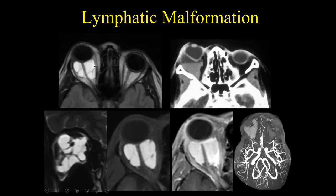Another cause of proptosis is lymphatic malformation. Here we can see high T2 signal with multiple small septations. Lymphatic malformations can occasionally have small vessels — lymphatic capillary malformations — and if they bleed, they can result in acute proptosis. We can see a blood-fluid level and distortion of the globe, sometimes referred to as a tension globe. These patients typically present with acute onset of proptosis.